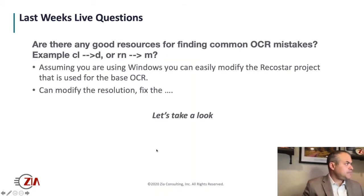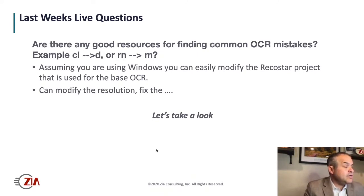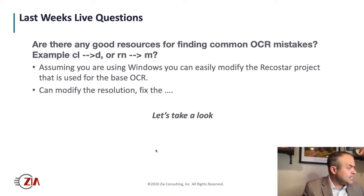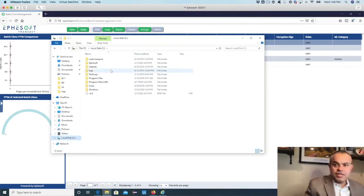The other question was: are there good resources for finding common OCR mistakes? For example, 'CD' being read as 'D', or 'RN' being read as 'M'. The short answer is that underneath EFASOFT there are two OCR engines depending on your OS: in the Windows world it uses Ricostar, and in the Linux world it uses Nuance. We do often modify this. There's an easier way within the Windows world using the Ricostar project editor or IDE. We're going to open up the back-end file directory of EFASOFT and take a look at what that looks like.